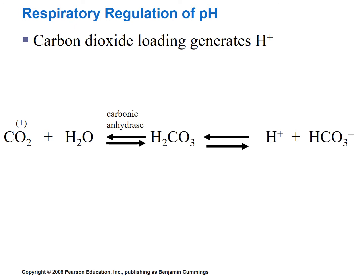In order to truly understand how the respiratory system regulates pH, you must commit this equation to memory. It is one of the most important equations in human physiology. Carbon dioxide plus water, catalyzed by the enzyme carbonic anhydrase, forms carbonic acid. Carbonic acid then dissociates into hydrogen ions and bicarbonate. This is a reversible reaction, meaning it can proceed from left to right or from right to left depending on the relative concentrations of reactants to products.